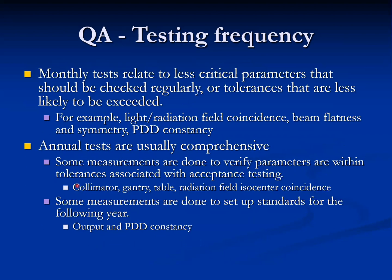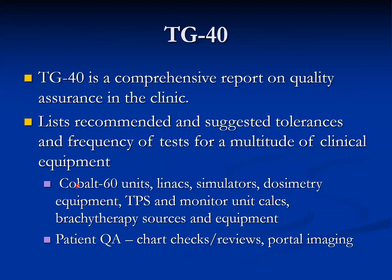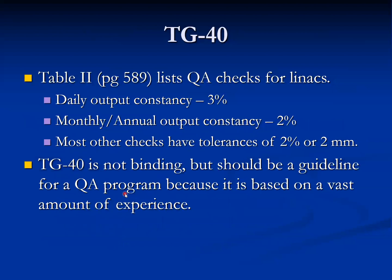Monthly tests relate to critical parameters that should be checked regularly or tolerances less likely to be exceeded — for example, light-radiation field coincidence, beam flatness and symmetry, and PDD consistency. Annual tests are usually comprehensive and are essentially a subset of commissioning. TG-40, initiated by AAPM in the early 1970s and 80s, is a comprehensive code of quality assurance for the clinic. It lists recommended tolerances and frequencies for multitude of clinical equipment including cobalt units, LINACs, simulators, dosimetry equipment, and patient QA charts. Most checks have tolerances of 2% or 2 mm. TG-40 is not binding but should serve as a guideline for a QA program because it is based on a large amount of experience.